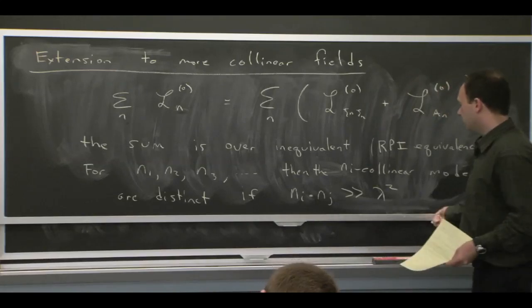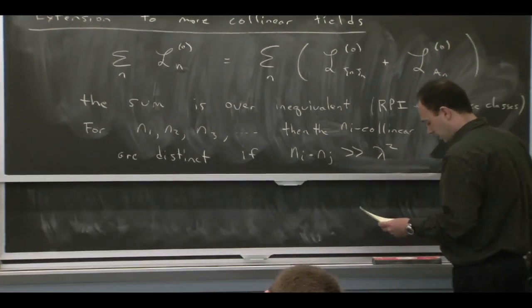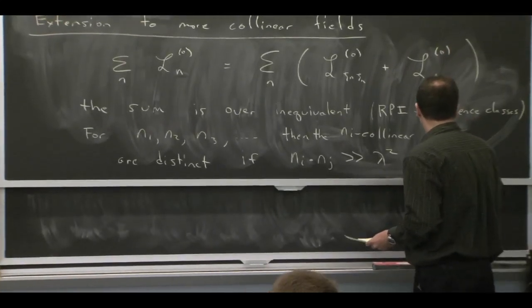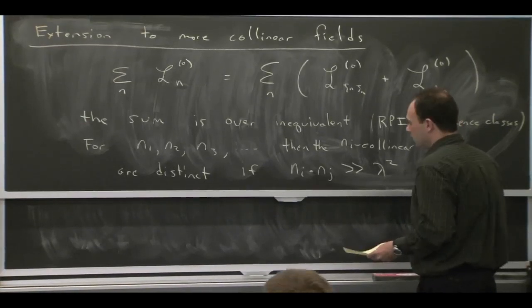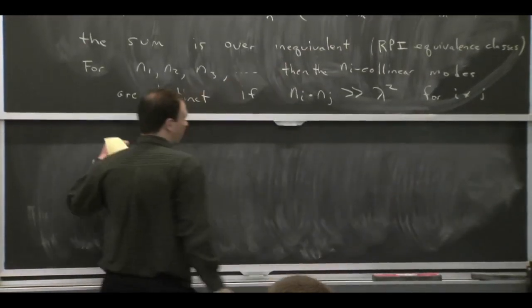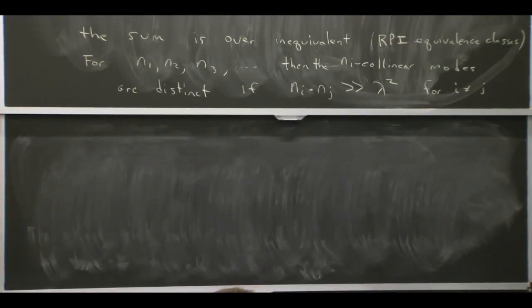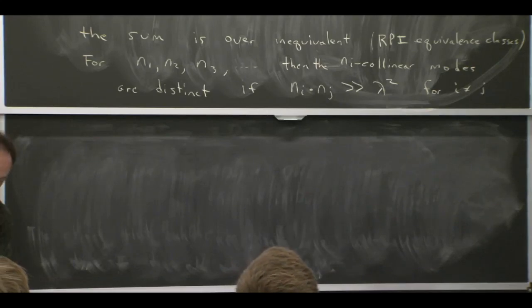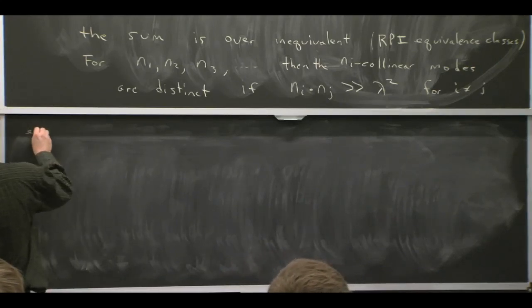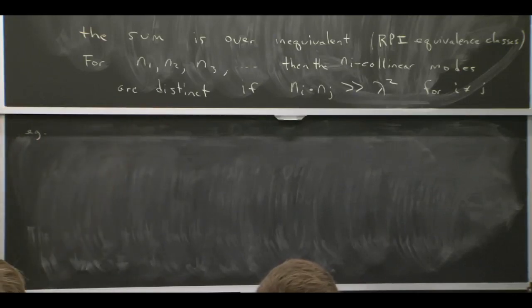And in fact, that they should be some value that's much bigger than lambda squared. Obviously, if i was equal to j, we'd get 0. But for any i not equal to j, we will say the n's are inequivalent if the dot product is much bigger than lambda squared. So let's see why it's lambda squared by doing an example. So that's, if you like, how you can define the equivalence classes.